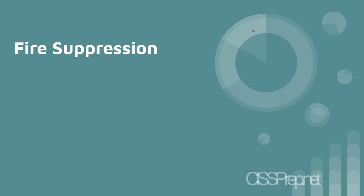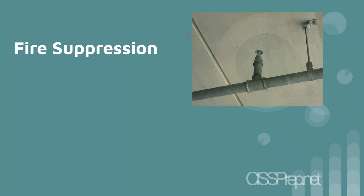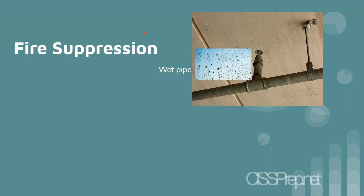Fire suppression is one of those things that, if you don't work with it on a daily basis, is a little confusing. Luckily, they took a lot of the previous content out of the common body of knowledge, but they did keep a few concepts. You don't need to know the fire types, but they do have things like the wet pipe — where the water is already there, ready to go — and there is of course a risk of leaks and flooding.